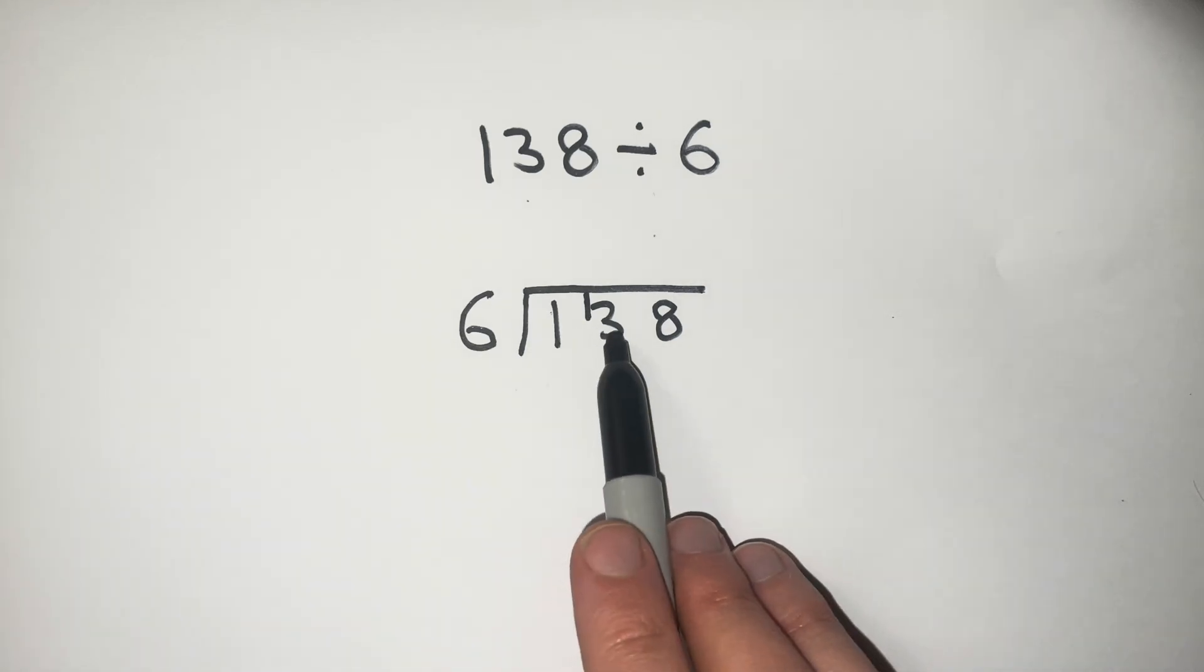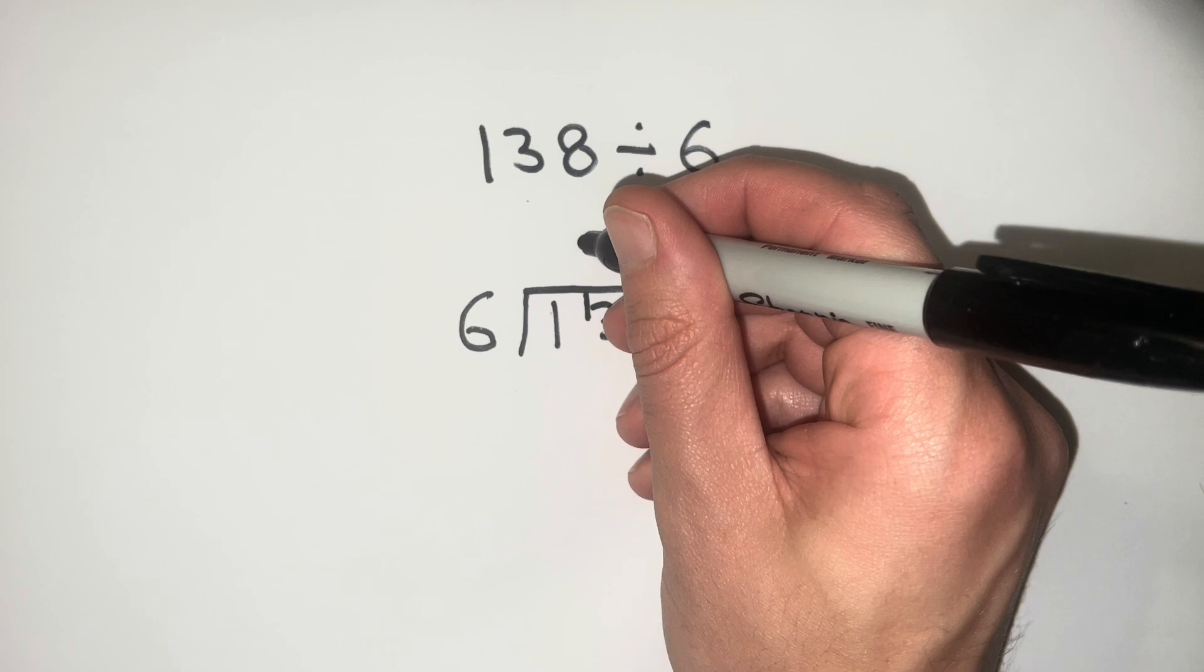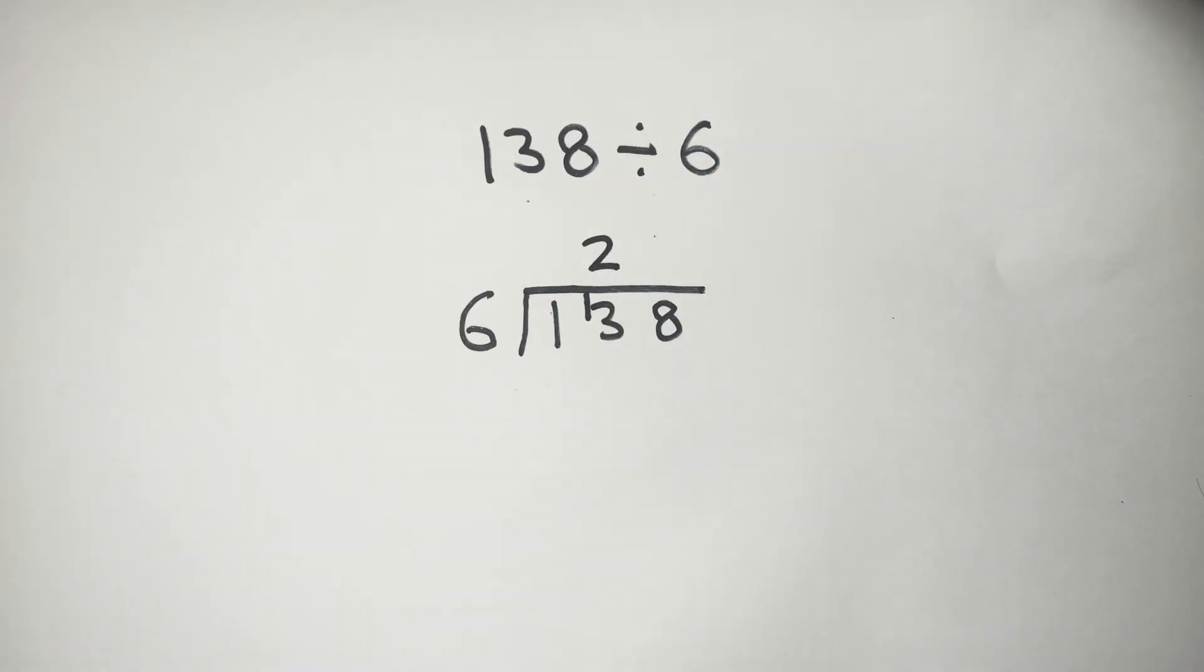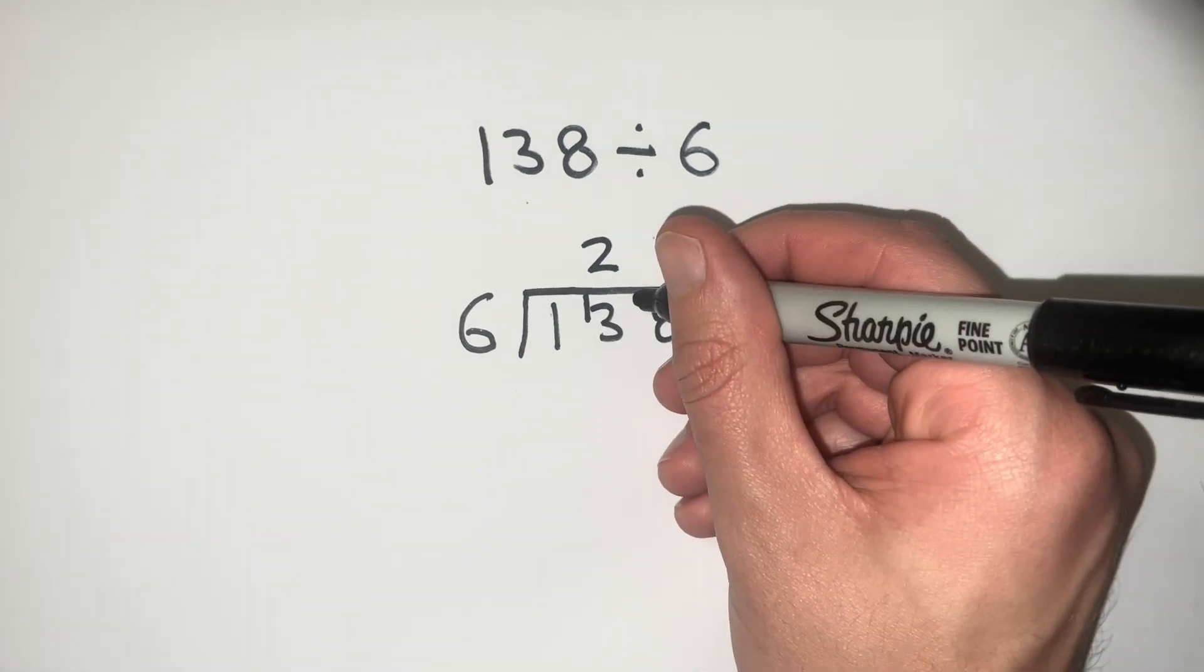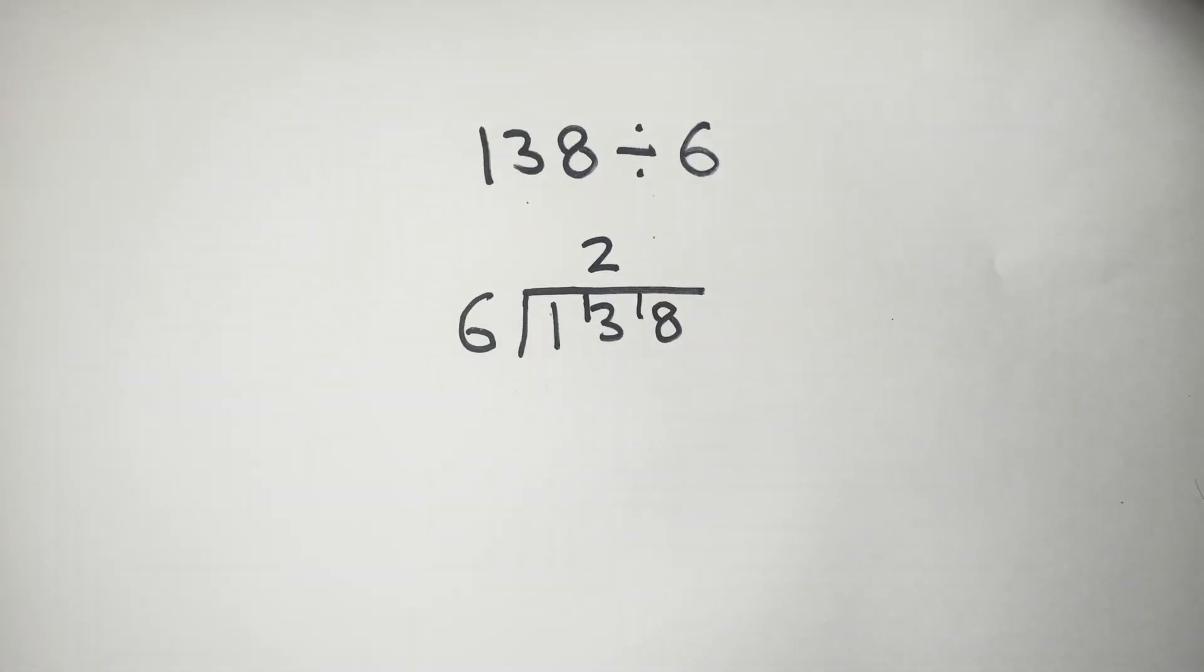We now ask how many 6s go into 13, and that's going to be 2. We're also going to have 1 left over because 6 times 2 makes 12, that's 1 more to get to 13. I'm going to carry that over to the 8 to make 18.